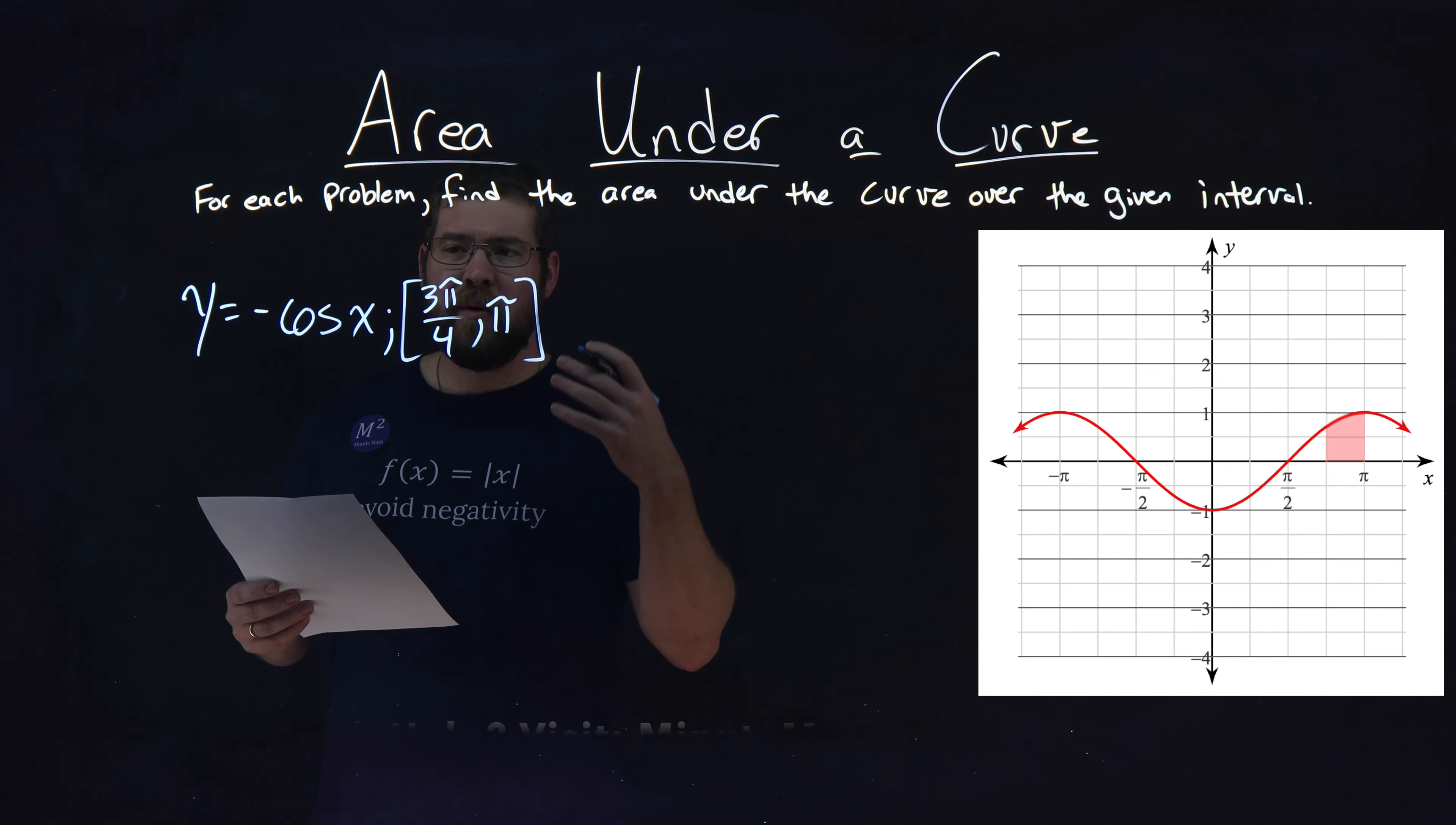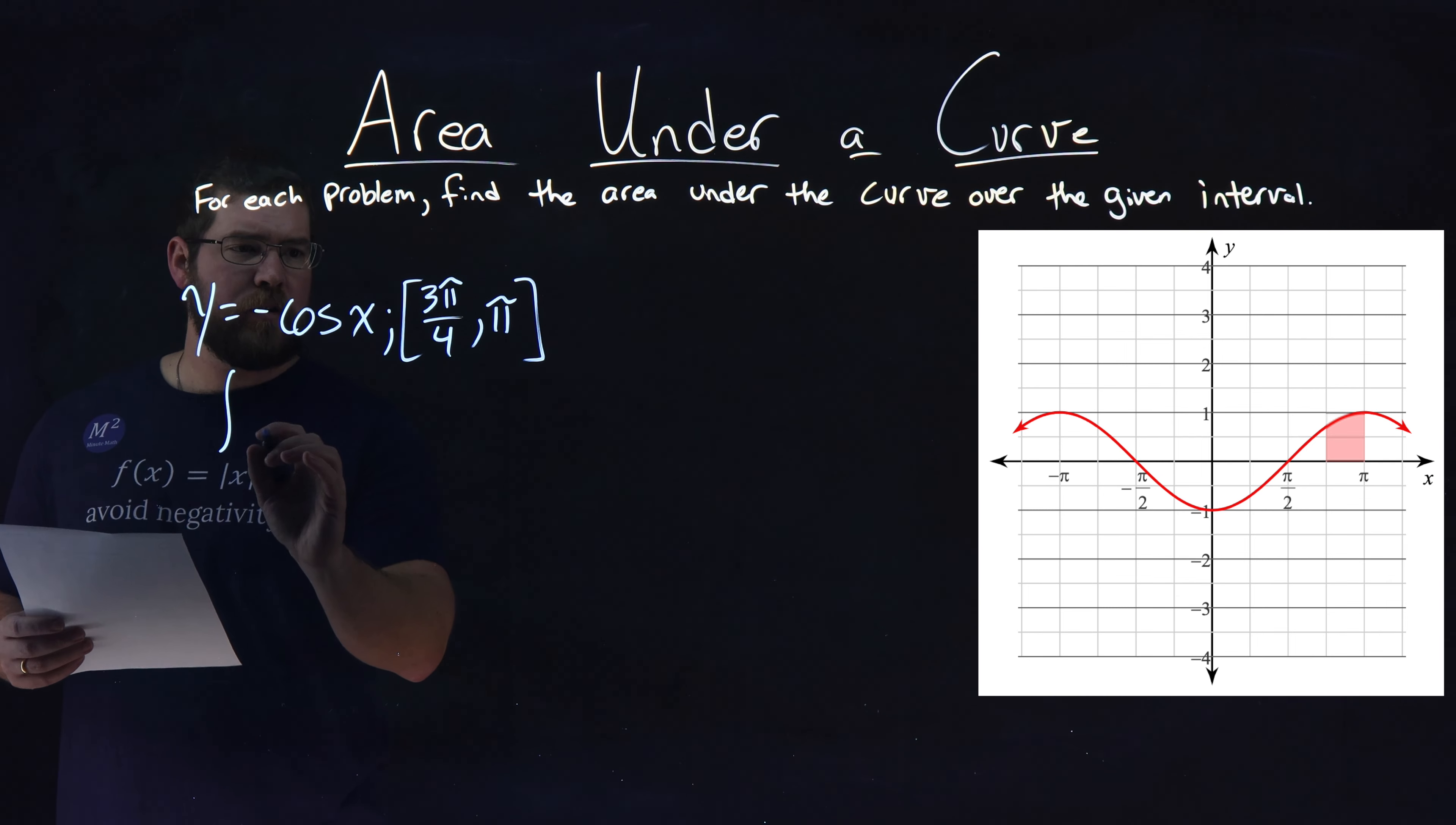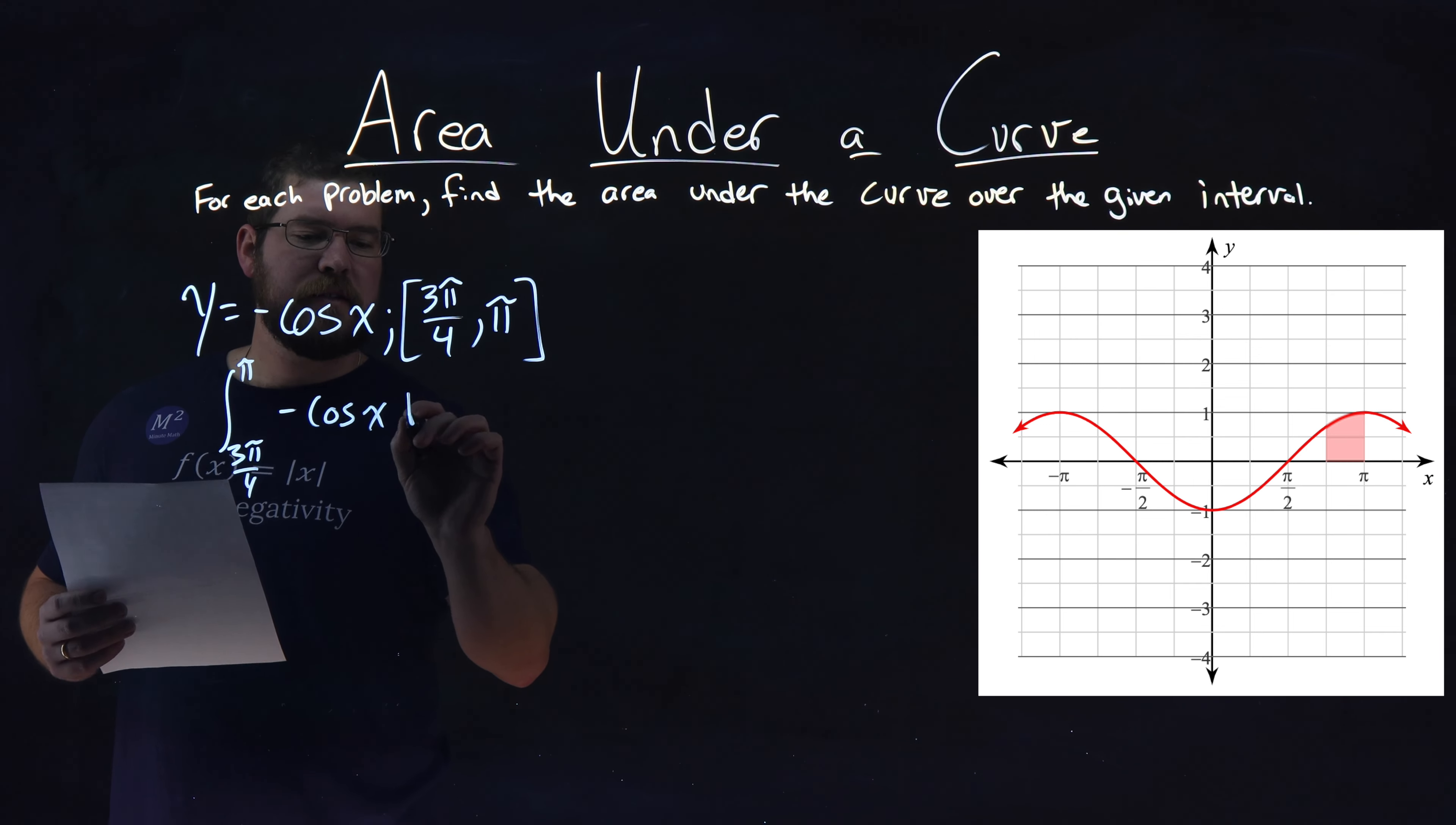Well, first thing I want to do is find what's the integral of cosine of x. So we have to set up our function here, our integral from 3π over 4 to π of negative cosine of x dx.